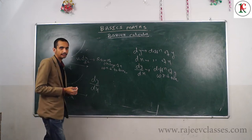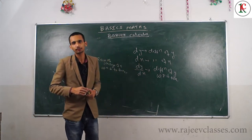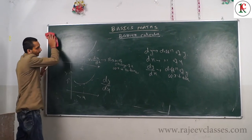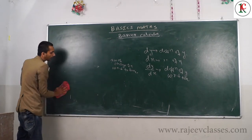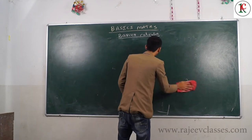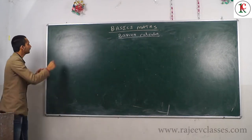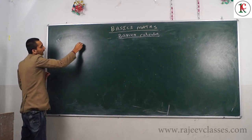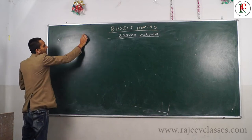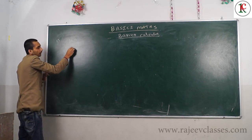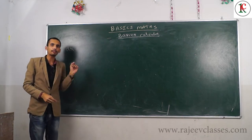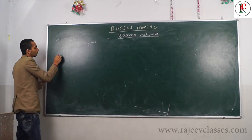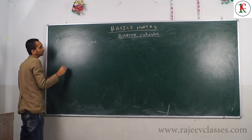Now let's learn the basic formulas for differentiation. First, differentiation of X power n with respect to X equals n times X power (n minus 1). The differentiation of log X equals 1 by X.